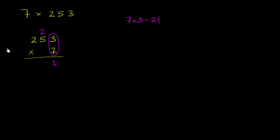Now I want to figure out what 7 times 5 is. We know from our multiplication tables that 7 times 5 equals 35. We can't just put the 35 down here - we still have to deal with this 2 that we carried.